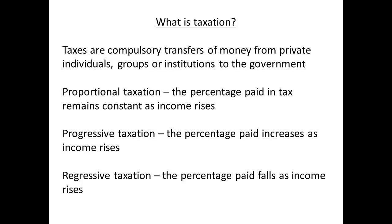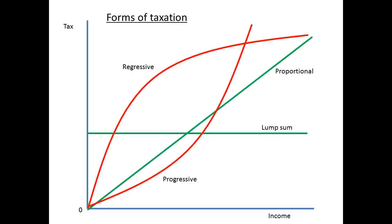We can group the effect that taxes have in three ways. A proportional tax will relate to a percentage that is paid in tax and remains constant as income rises. A progressive tax will have the percentage falling as the income rises. A lump sum is a fixed payment made regardless of income, so is a form of regressive taxation since it becomes a smaller percentage of total income if the income rises.